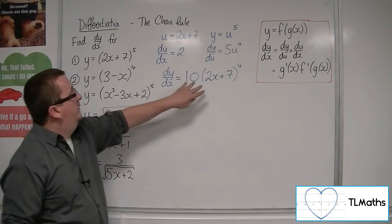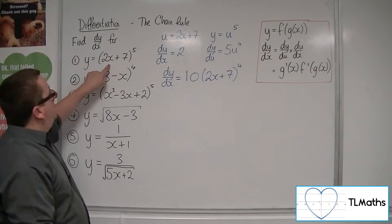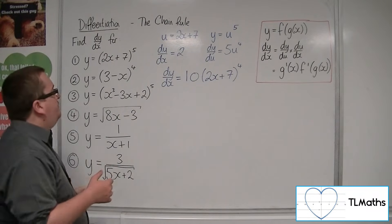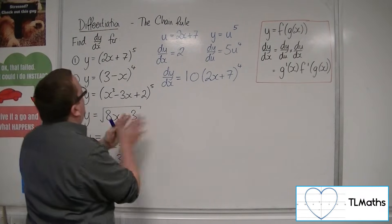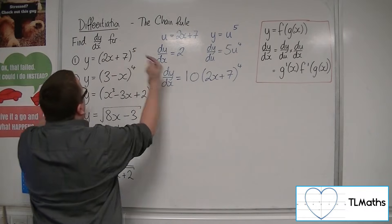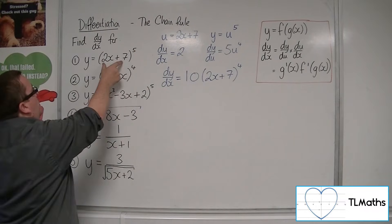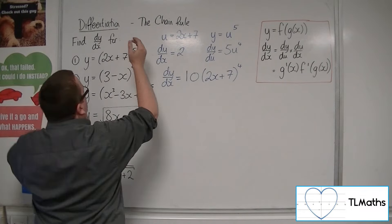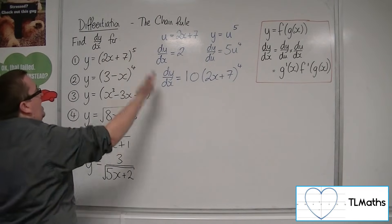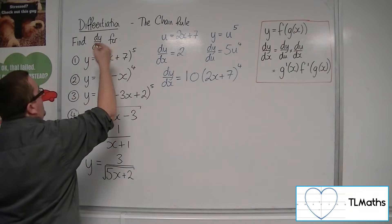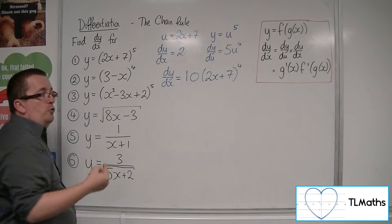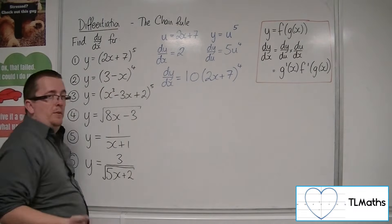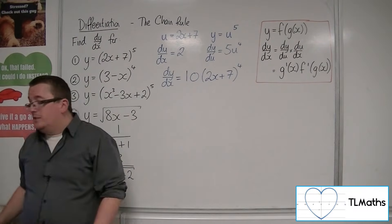Now, how to do this quickly, you need to be thinking about, well, the derivative of what's inside comes outside. So the derivative of the inside is 2, that comes outside. You then bring the 5 down to the front and take 1 off the power. So the 5 multiplies with the 2 that's already outside and you get 10 and you've taken 1 off the power. So that's the process.